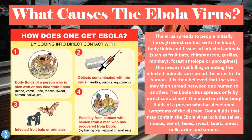Human-to-human transmission can happen through any sort of bodily fluids. If someone who has Ebola comes into contact with an uninfected person and that person contacts their saliva, mucus, vomit, urine, feces, sweat, or semen, they will contract the disease. One may also contract the disease through objects contaminated with the virus such as needles and medical equipment, or possibly through semen from a man who has recovered from Ebola via vaginal, oral, or anal sex.